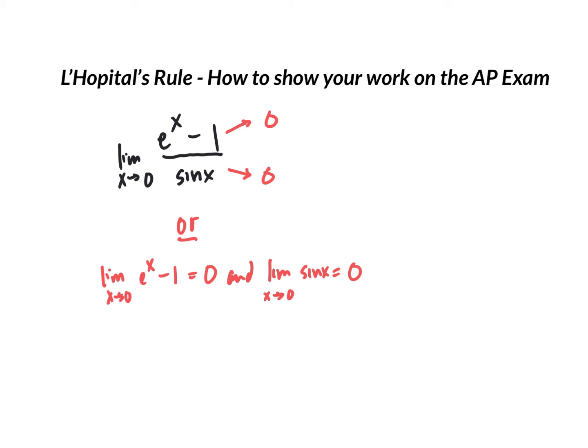Here's what you absolutely cannot write. You cannot write that your limit equals 0 over 0. You cannot write that because to write that is to say it is indeterminate. And that is not what we're saying. We're saying that both the top and bottom go to 0, so we are allowed to use L'Hôpital's rule. I cannot stress enough, do not ever write 0 divided by 0. You will automatically be out of earning points if you write 0 divided by 0.